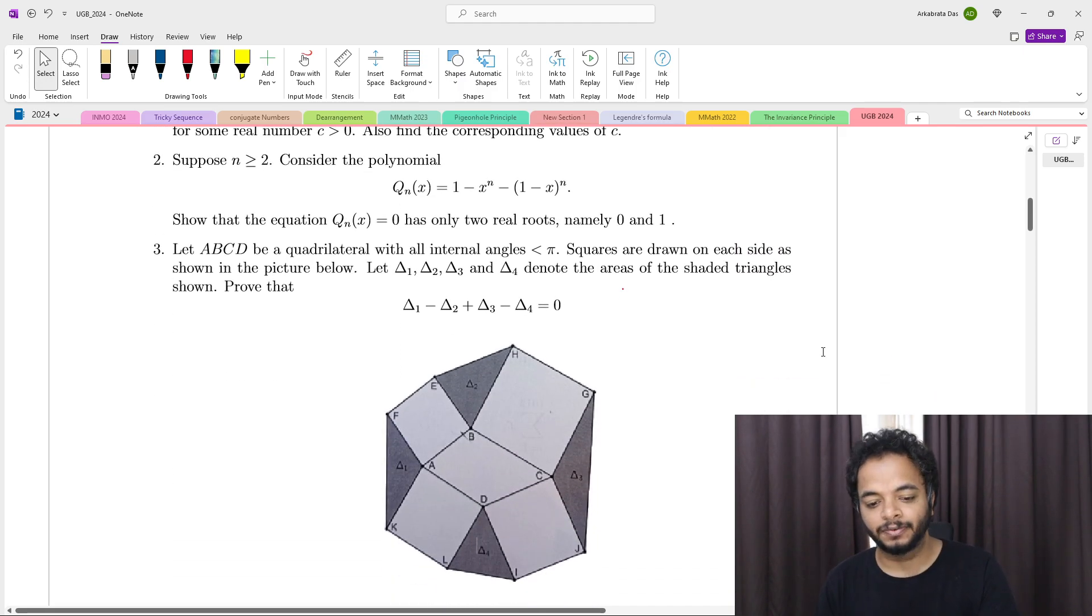In this video I'm going to discuss the third one, which is the easiest problem out of all the problems that I saw. A quadrilateral is given with all internal angles less than 180, and squares are drawn on each of these sides of the quadrilateral. These areas of these triangles are denoted as delta 1, delta 2, delta 3, and delta 4.